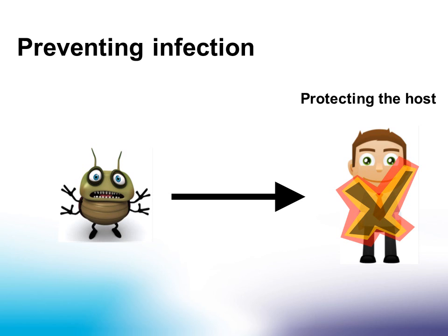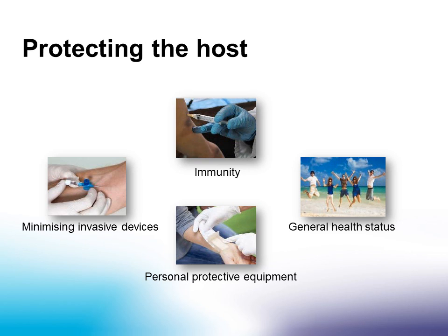The third method to break the chain of infection is protecting the host. Protection of the host may occur via immunity to infection from prior disease or immunisation, or by using personal protective equipment such as gloves to protect non-intact skin. Minimising the use of unnecessary invasive devices in patients prevents a portal of entry, and the general health status also has a role in protecting the host from infection.